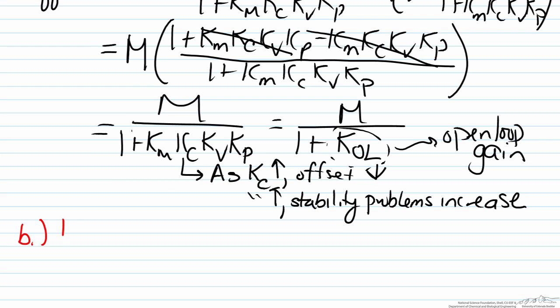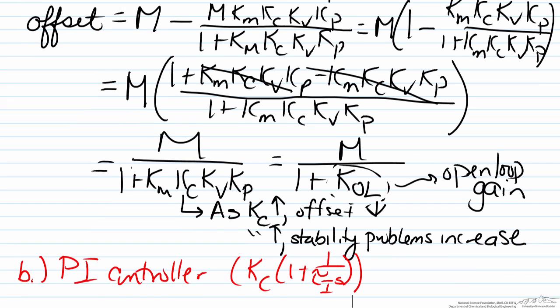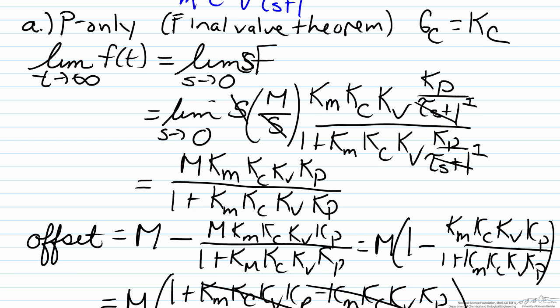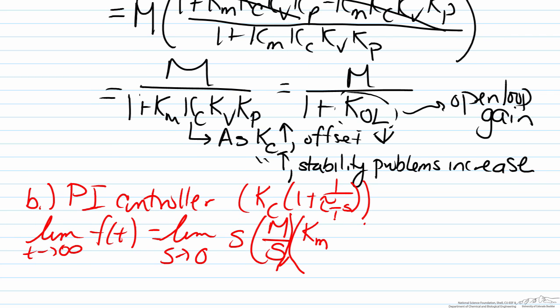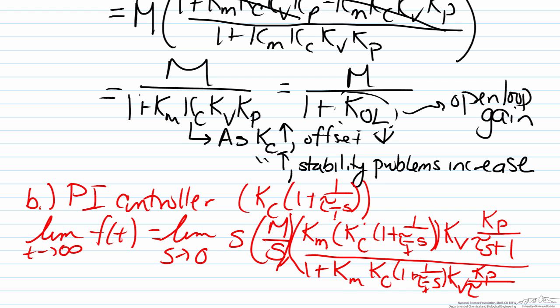For part b we will do the exact same analysis except for a PI controller. And for a PI controller our transfer function here is going to be Kc times one plus one over tau_i s. If we put that into our transfer function analysis that we just did using the same approach as what we did for the P only, we will have that the limit as t approaches infinity of our function will equal the limit as s approaches zero of s times our function M over s multiplied by Km. The controller transfer function will multiply this by Kv and by our process function.